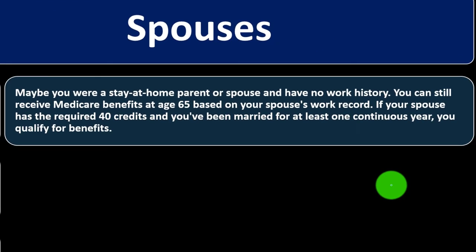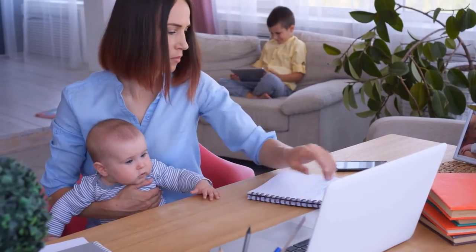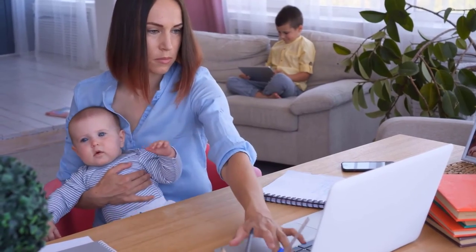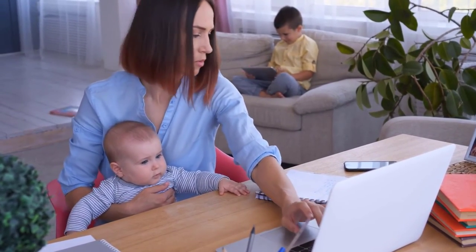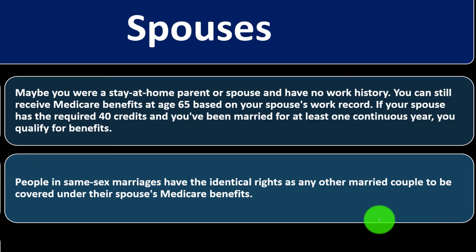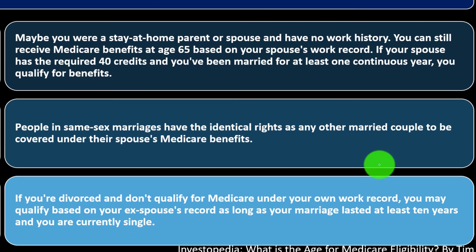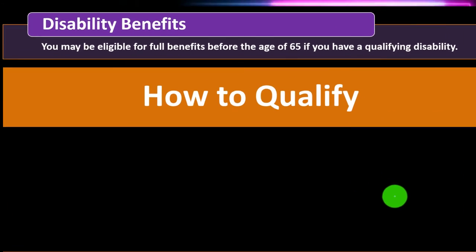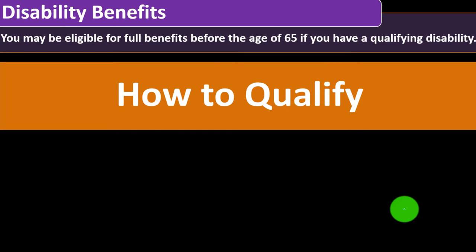Regarding spouses: if you were a stay-at-home parent or spouse with no traditional work history tracked for Social Security, you can still receive Medicare benefits at age 65 based on your spouse's work record, provided your spouse has the required 40 credits and you've been married for at least one continuous year. People in same-sex marriages have identical rights. If you're divorced, you may qualify based on your ex-spouse's record if the marriage lasted at least 10 years and you are currently single.